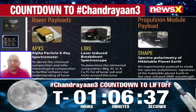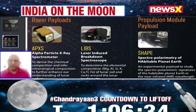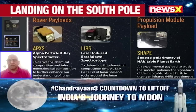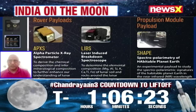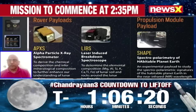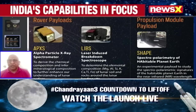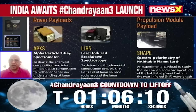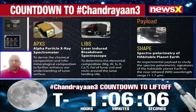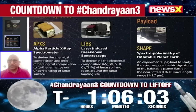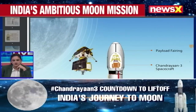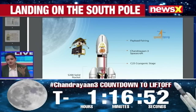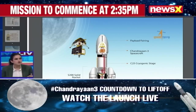Besides, we have the rover, which has two instruments for in-situ chemical analysis of the lunar soil. The rover is mobile — the lander is static wherever it lands — but the rover can move around and carry out studies at different locations around the lander, without going too far so it always remains in communication. It is the instruments on the lander that also study the presence of water or water ice on the moon.